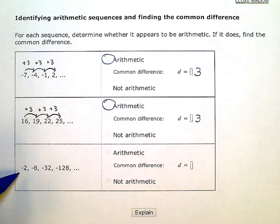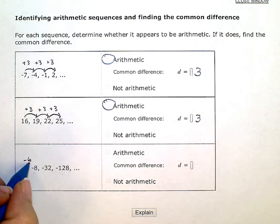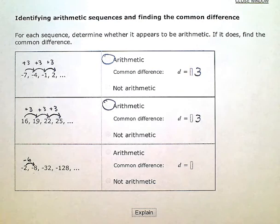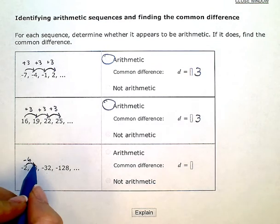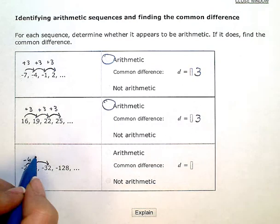A third example here. To get from negative 2 to negative 8, I am subtracting 6 or adding negative 6. To get from negative 8 to negative 32, I would have to subtract 24.